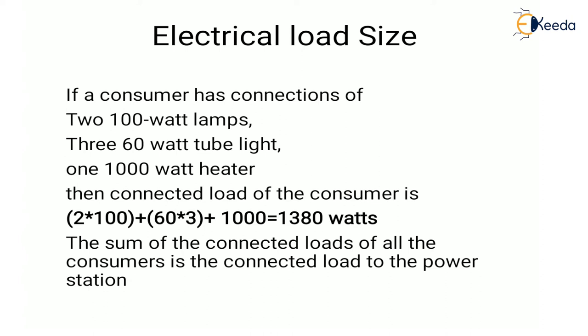Let us take an example on how to get electrical load size for a residential consumer. If a consumer has a connected load of 2 lamps of 100 watts each, 3 tube lights of 60 watts each, and a 1000 watt heater, then the connected load of the consumer is 2×100 + 3×60 + 1000, which equals 1380 watts.